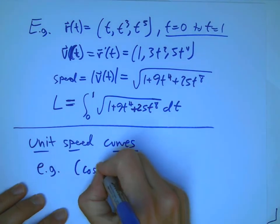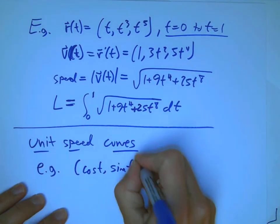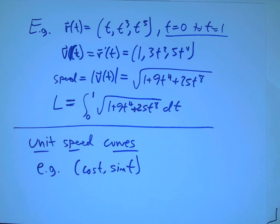So for example, cosine t, sine t, without the r, is a great example of a unit speed curve.